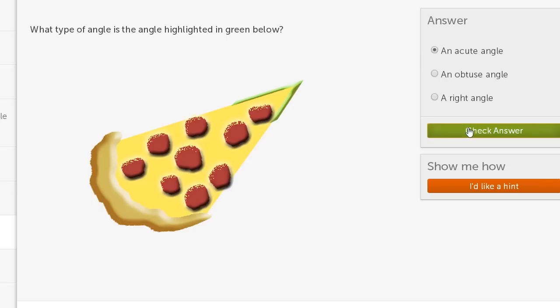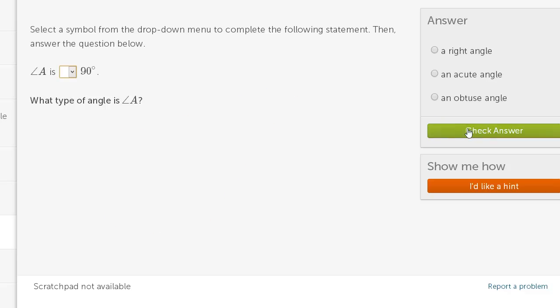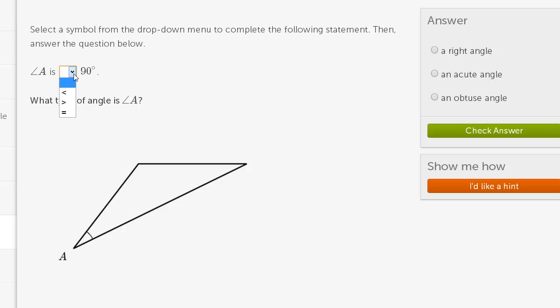Let me just do one more. This is a lot of fun. Select a symbol from the dropdown menu to complete the following statement. Then answer the question below. Angle A is less than 90 degrees. What type of angle is angle A?